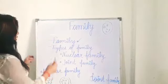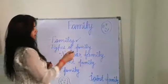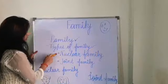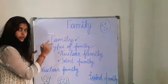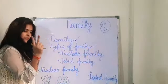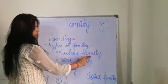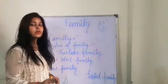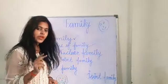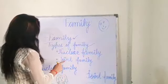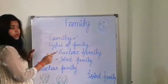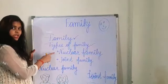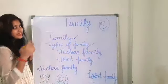Now, types of family. There are two types of family. First is nuclear family, also called small family, and second is joint family. Now let's have a look at each one in detail.